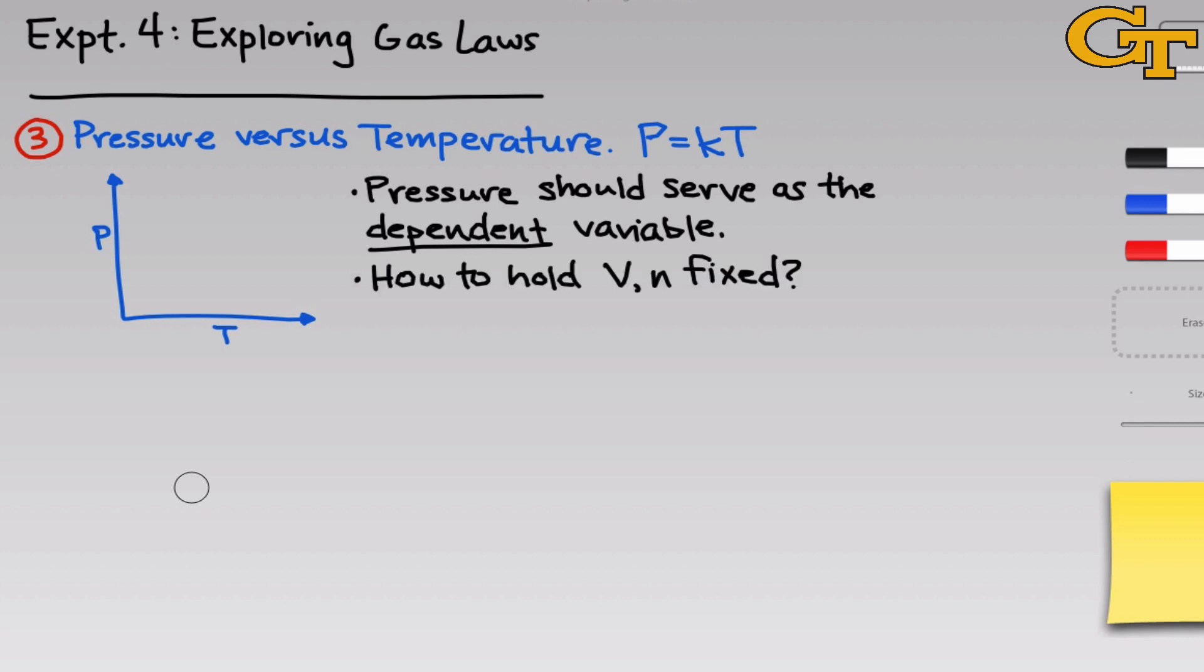You'll also want to think, when you're designing this experiment, how to hold volume and number of moles fixed. This is important because if volume and number of moles are changing at the same time as pressure and temperature, then we can't isolate changes in pressure as due only to a temperature change. That's important if we really want to ascertain the effect of temperature only on pressure.